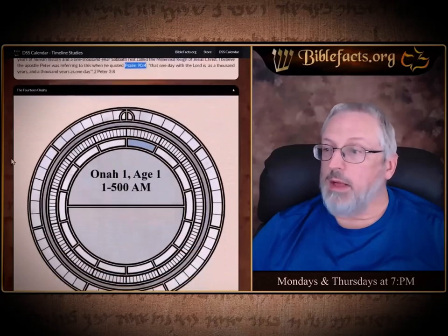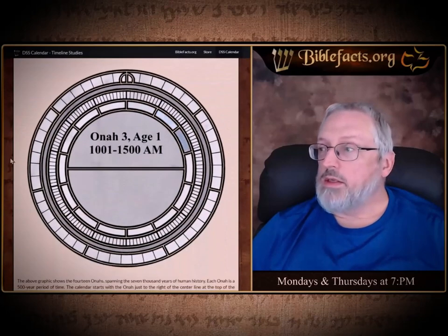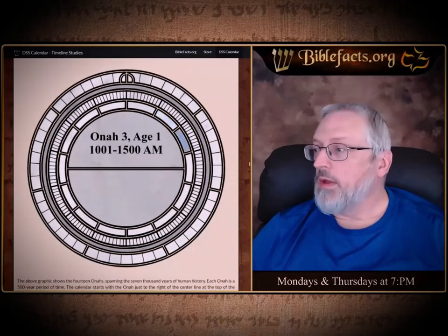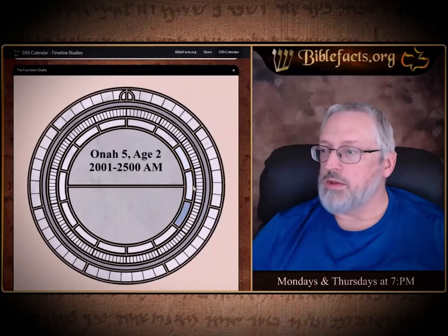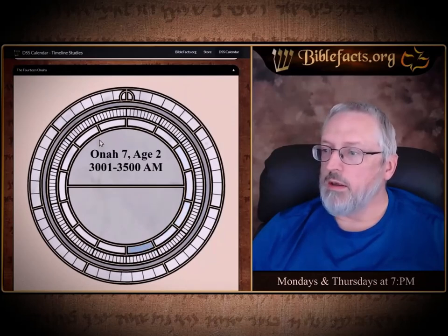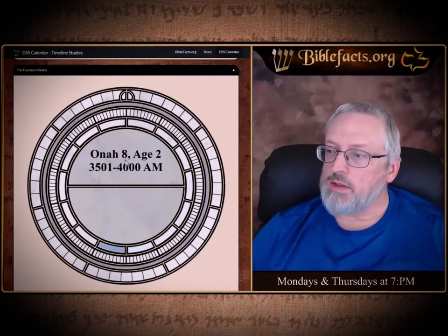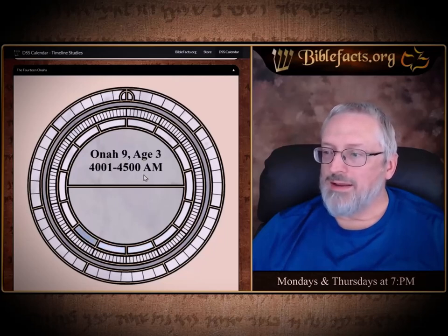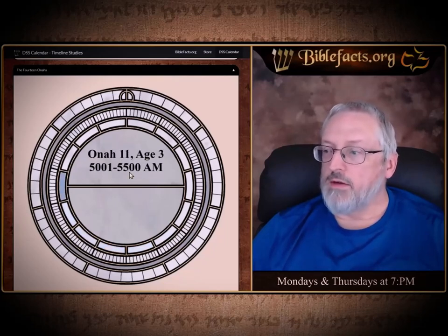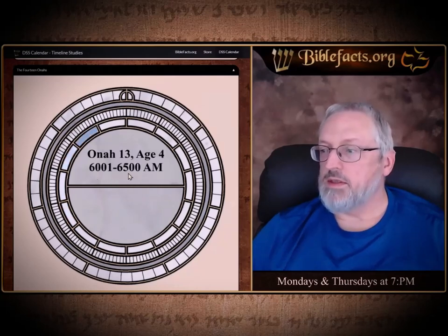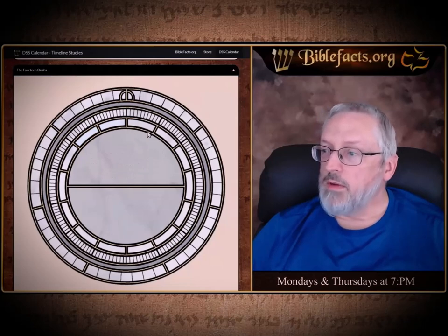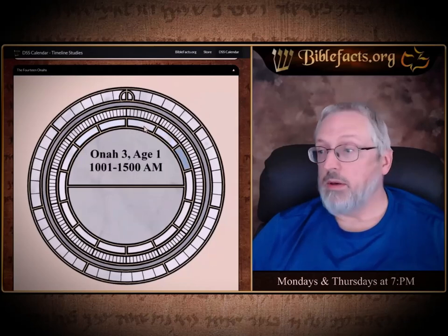Here is a picture of the 14 Onas — one through fourteen — showing the Ona, the age, and the dates. So it's like years 1–500, 500 to 1000, 1000 to 1500, 1500 to 2000. Each one is a 500-year period, counted one through fourteen. It's not like days of the week that reset; these are tallied up cumulatively.